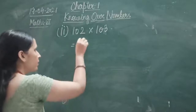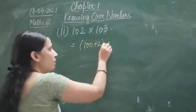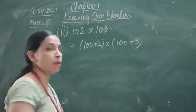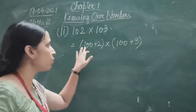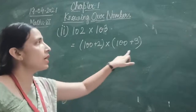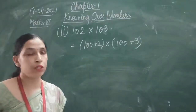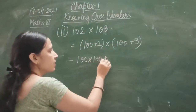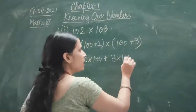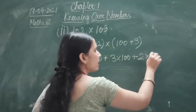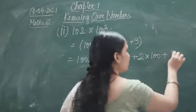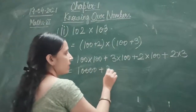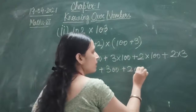We can write 102 as 100 plus 2 and 103 as 100 plus 3. Now this one number will be multiplied by both. This 100 will be multiplied by 100 also and by 3 also. Similarly, this 2 will be multiplied by 100 also and by 3 also. So: 100 × 100 plus 100 × 3, that will be 300, plus 2 × 100 plus 2 × 3.